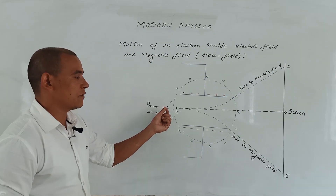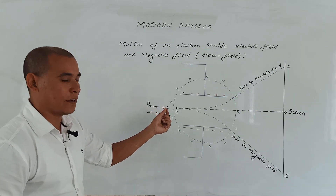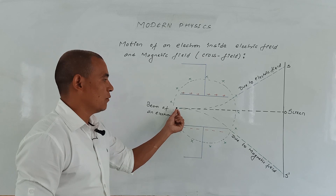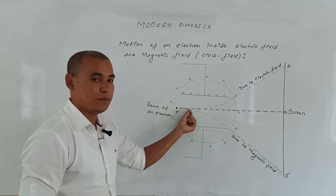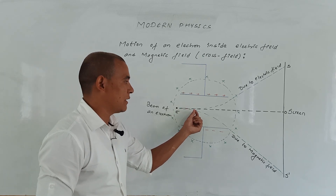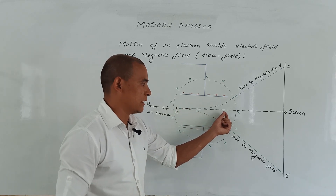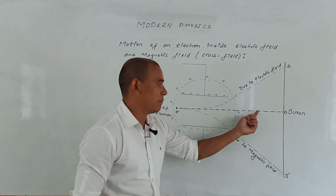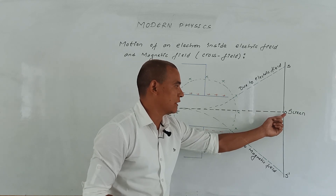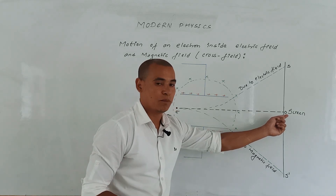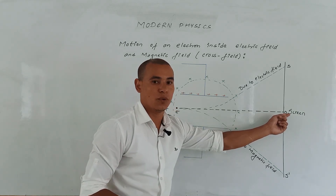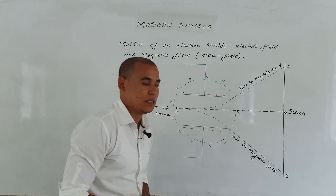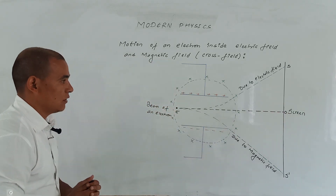When both electric field and magnetic field are present, the motion of the electron remains undeviated. Due to the combined electric and magnetic fields, the electron strikes at position O on the screen.